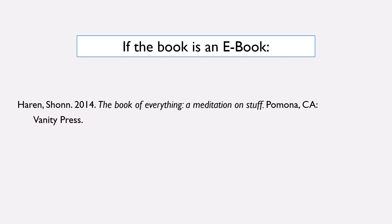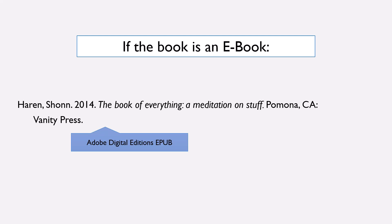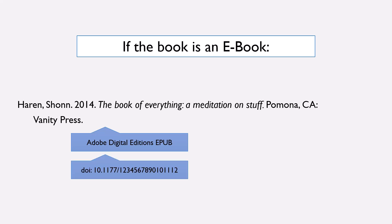If the book in question is an electronic book, there are a couple of different ways that the citation can be formatted. All of the information previously included remains the same, but we place one more bit of information at the end, and what we put there depends on how the e-book was accessed. If the e-book was accessed through a system that restricts access, like materials in the library collection, you provide the format of the e-book, such as Adobe Digital Editions EPUB in this case. If the e-book is freely accessible to all, you can provide either the URL of the book or its DOI if available. As the DOI is more stable, it is preferred to the URL if the e-book has one.